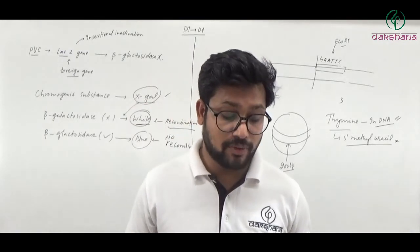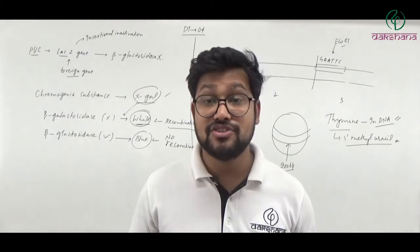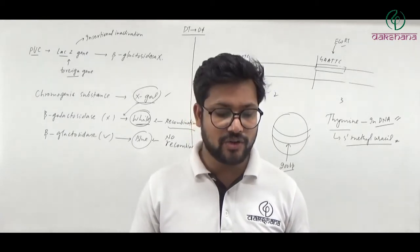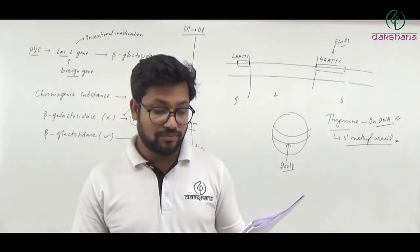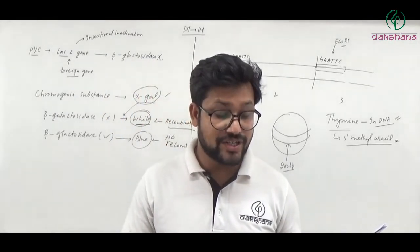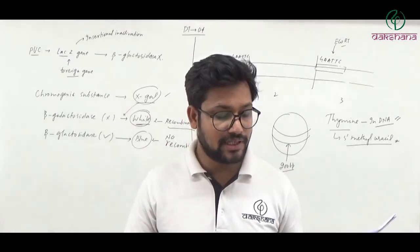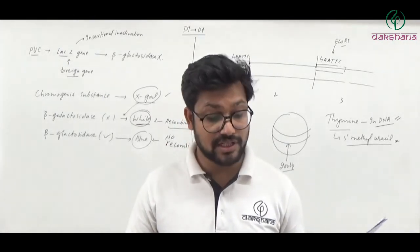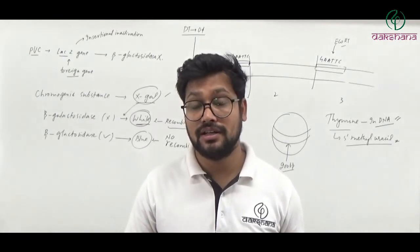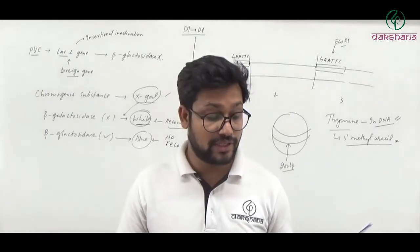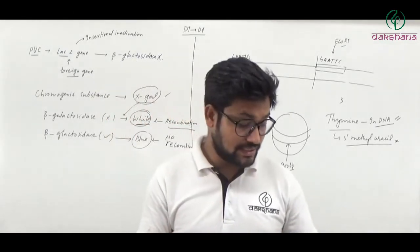Question number thirty-five: The portion of underground stem bearing buds forms a new plant in ginger. This is referring to the rhizome. Underground buds do not develop in Adiantum and algae. Question number thirty-five's second option is the right answer.